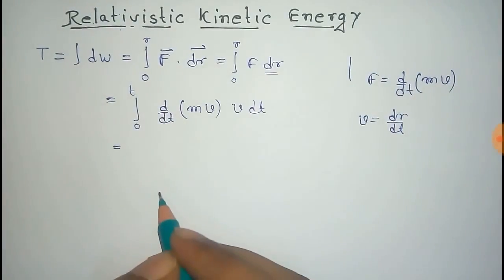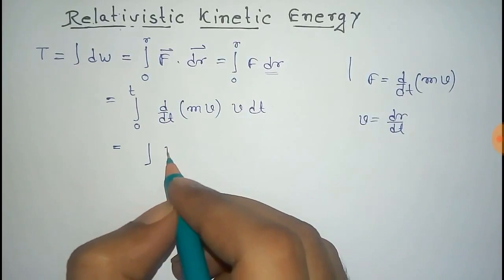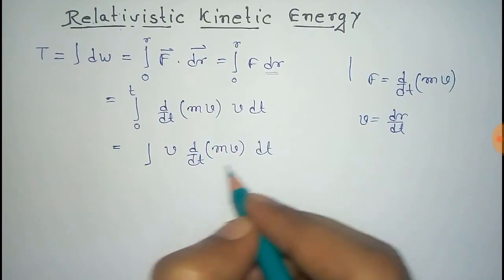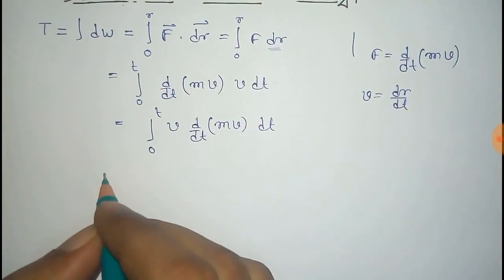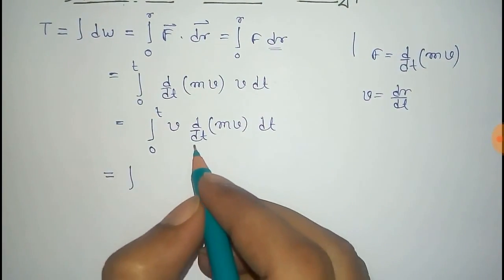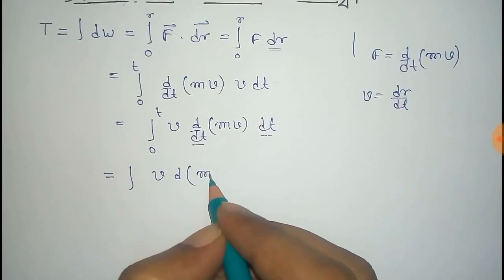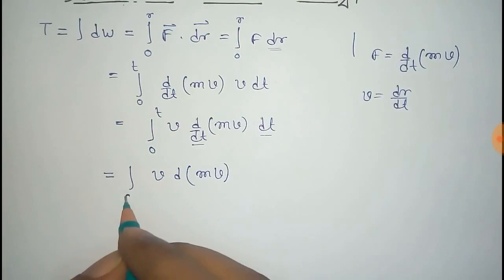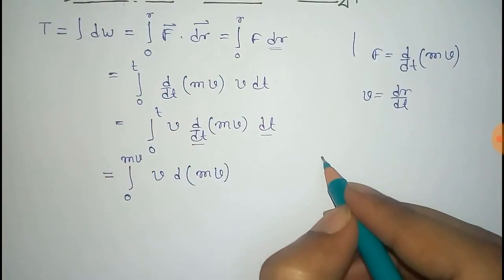We can rewrite this as V into d/dt of MV into dt, with the limit 0 to T. This DT and DT cancel, so it becomes the integral of V d(MV). Since this is d(MV), the limit changes to 0 to MV.